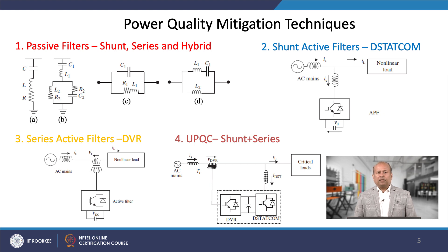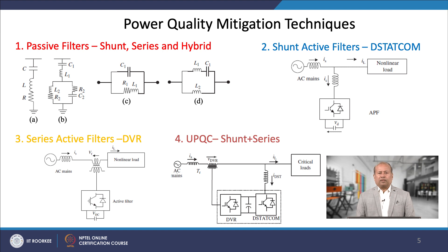The first mitigation technique is passive filters, which may be shunt type — as seen in figures a and b — or series type — as seen in figures c and d — or hybrid type, which is a combination of both shunt and series. These filters consist of reactive elements such as inductors and capacitors, with and without switching. In high voltage AC and DC transmission systems, passive filters are much in use due to their low cost, simplicity, robust structure, and reactive power compensation at the fundamental frequency.